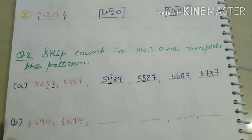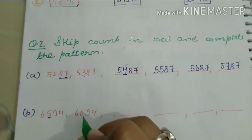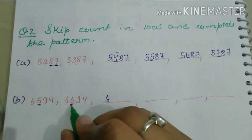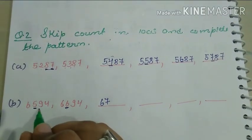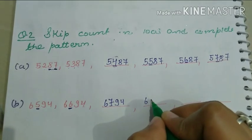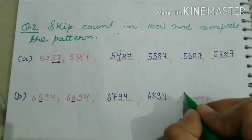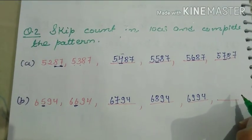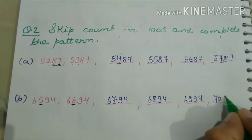For the next skip counting in hundreds pattern, we again change only the hundreds digit. After 6 comes 7, then 8, then 9, then 10 — giving us a carry into the next pattern, resulting in values like 7094.